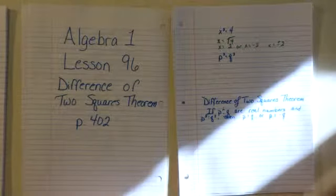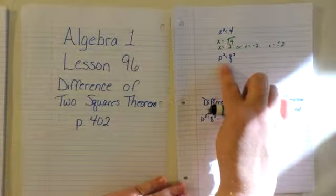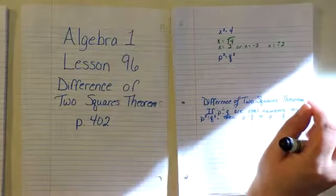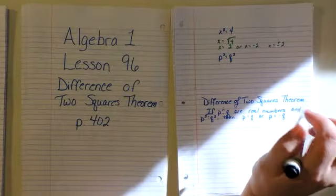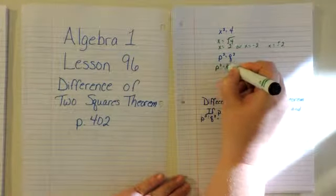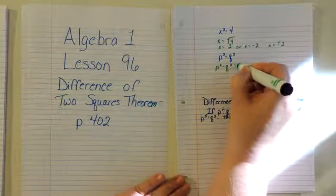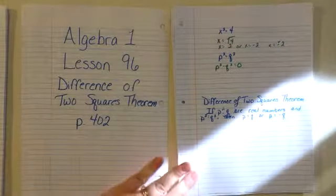The general form of a quadratic equation like this is p squared equals q squared. If we add negative q squared to both sides, we get p squared minus q squared equals 0. And now we have the difference of two squares so we can factor.